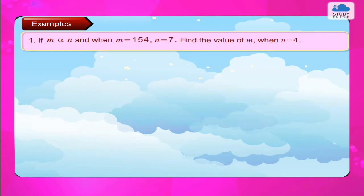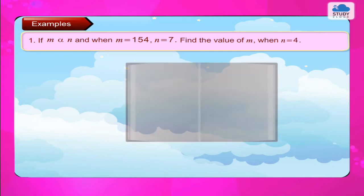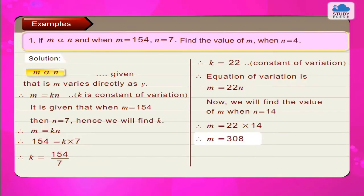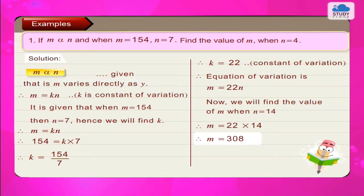Example 1. If m is directly proportional to n, and when m = 154 and n = 7, find the value of m when n = 14. Solution: m is directly proportional to n. Therefore m = k × n, where k is the constant of variation.